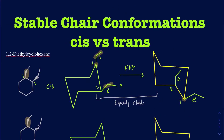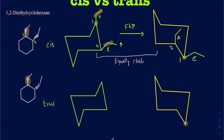Now let's look at the trans. In trans, you're going to have one coming out of the page and the other one going back into the page. I'll call this one and this two. So carbon one goes up — the ethyl group on that first position is coming out of the page. On carbon two, since it's going back into the page, I'm going to draw that pointed down. So the ethyl groups on one and two are trans to one another — one is pointed up and two is pointed down.